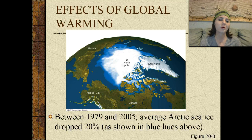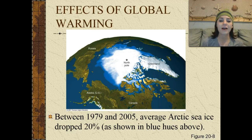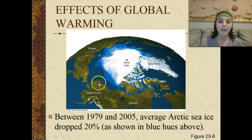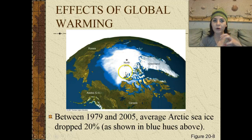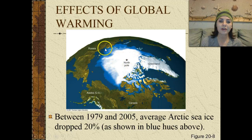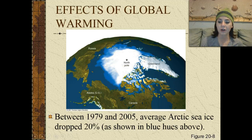What are the effects of global warming? Between 1979 and 2005, average Arctic sea ice dropped about 20%, and this is shown right here in the blue hues above. We have the North Pole, Greenland, and this is where ice is still frozen and hard. But as you see this light blue area right here, this is where all of the melting is starting to occur.